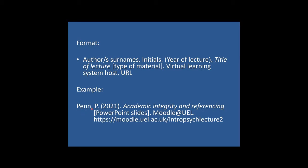The first thing you'll note is the surname and initial of the author or authors of the lecture material. This is followed by a space, open brackets, then the date of the lecture — just a year — then close brackets, full stop. Then a space followed by the title of the lecture, which appears in italics. Then a space followed by open square brackets, the type of content you're referring to — in this case PowerPoint slides, but it could be lecture notes — then close brackets, full stop. Then another space, the virtual learning system host of the lecture material — in this case Moodle, but you might be using Canvas or Blackboard — followed by a full stop, a space, and then the URL a reader would need to access that specific learning material.